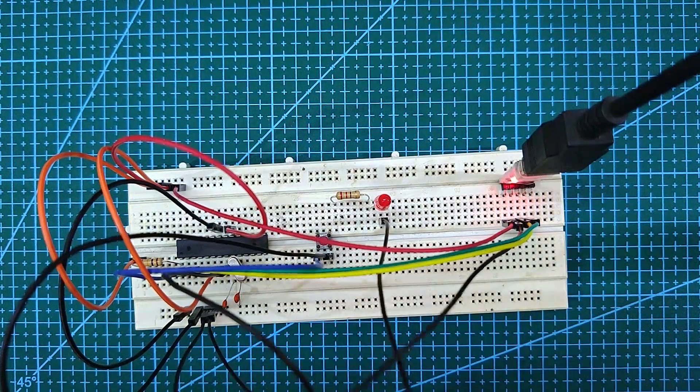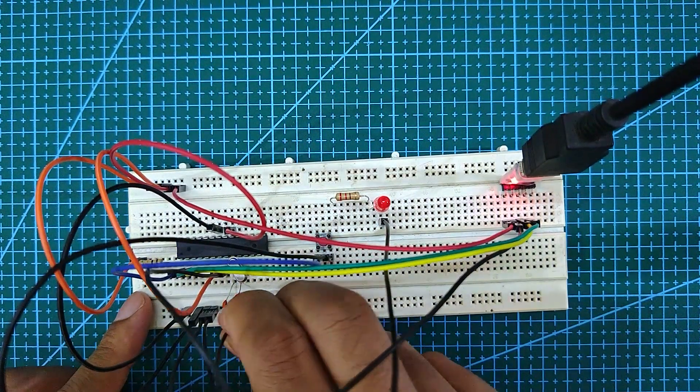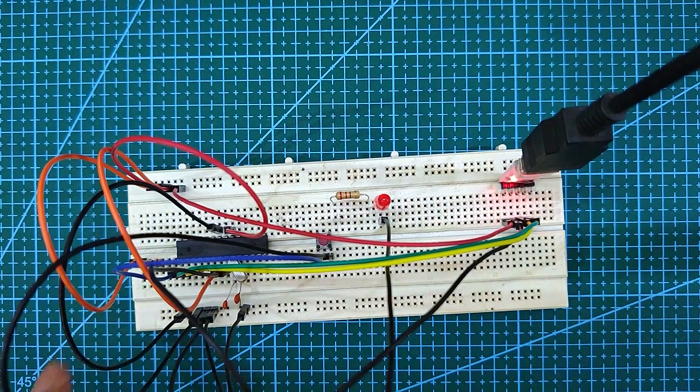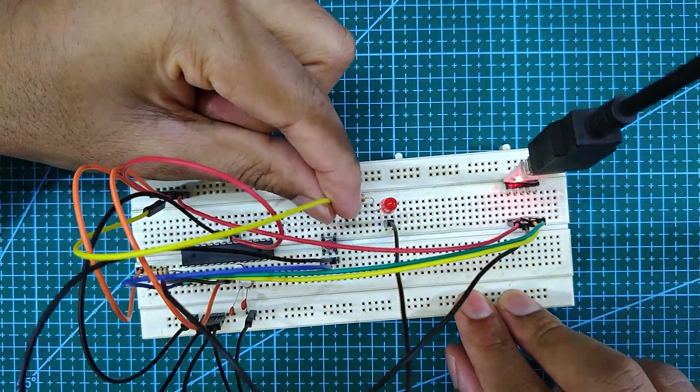Now to confirm the upload is successful, I'm connecting a 220 ohm resistor with an LED to pin 19 of the ATMEGA 328P.